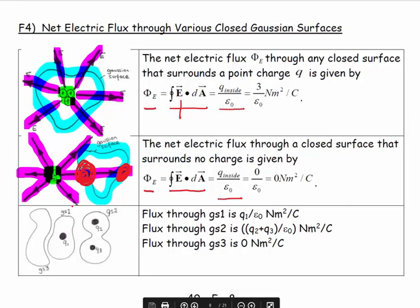Just a couple of examples at the end. If I take my Gaussian surface 1, which is this guy, I have Q1 inside my first Gaussian surface. So the flux through the first Gaussian surface will be Q1 over epsilon naught Newton meter squared per coulomb. And if I look at my second diagram, I see that I have Q2 and Q3 inside, so my flux would be Q2 added to Q3 over epsilon naught Newton meter squared per coulomb.